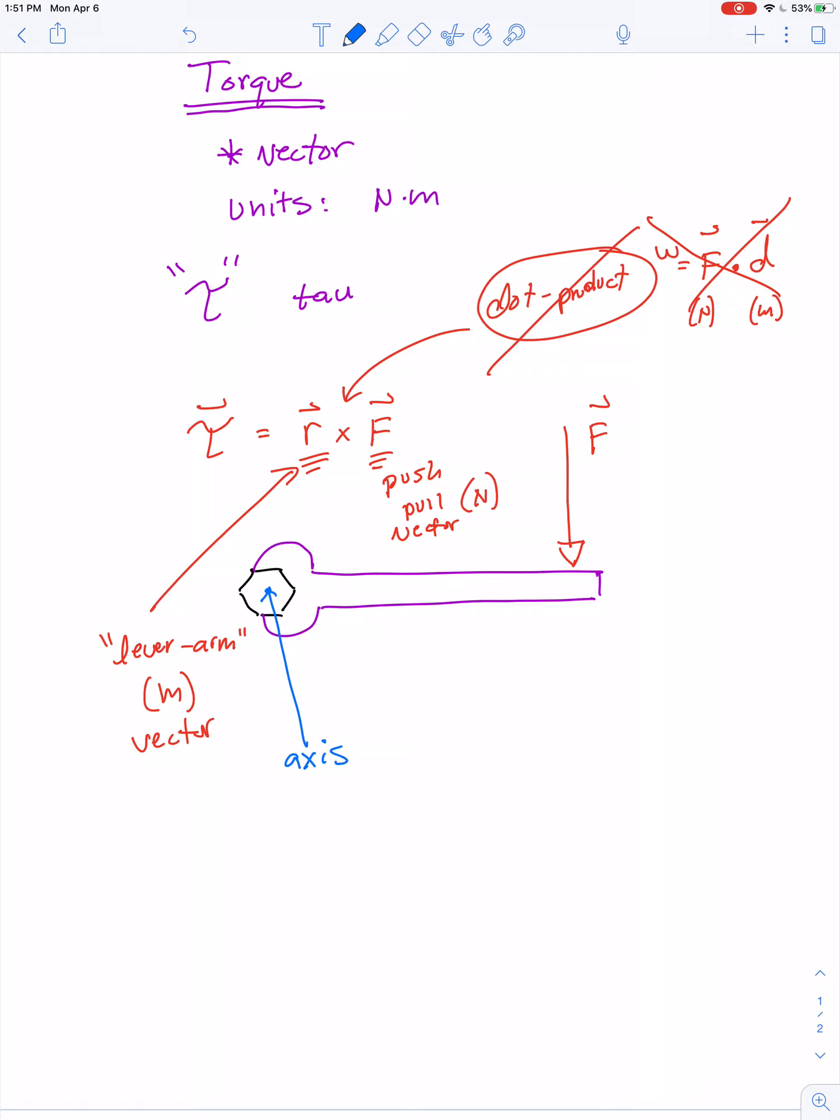The lever arm is measured from the axis of rotation all the way to the point where the force is being applied. We have two quantities that can be represented as arrows, so they're both vector quantities.